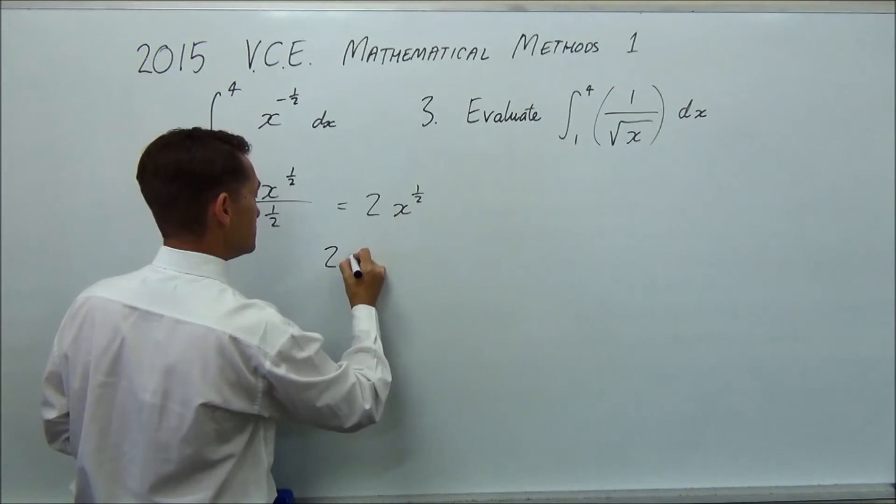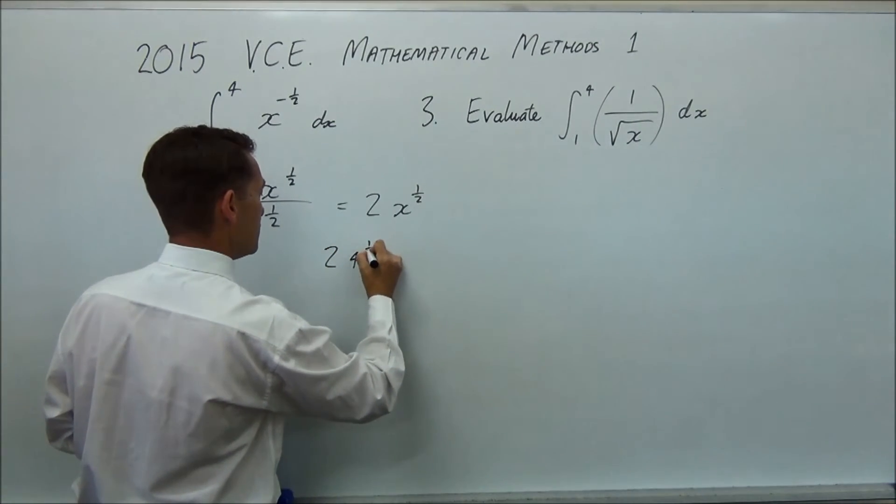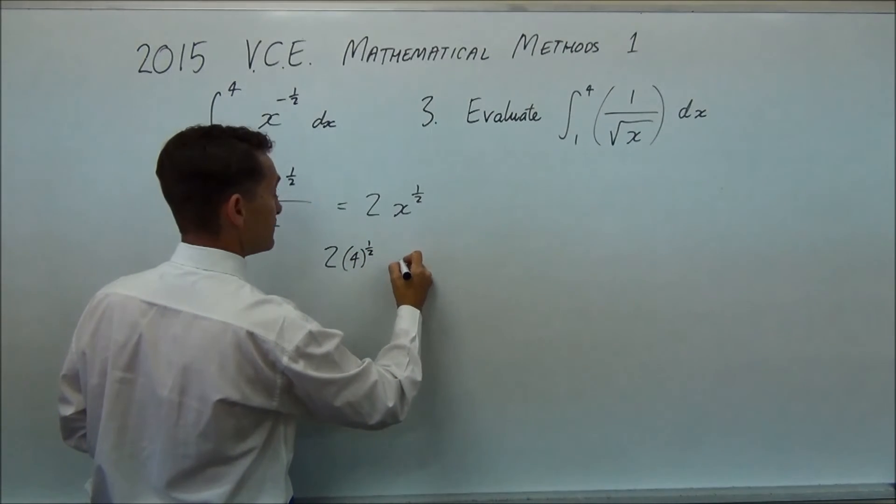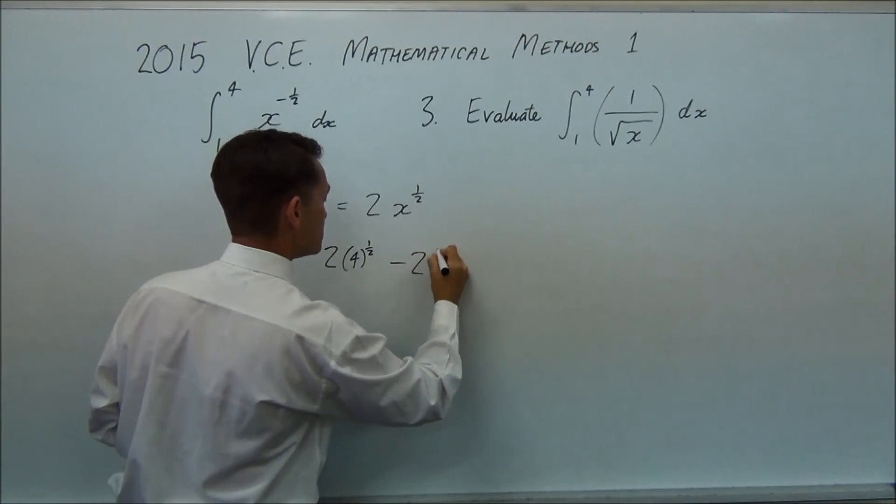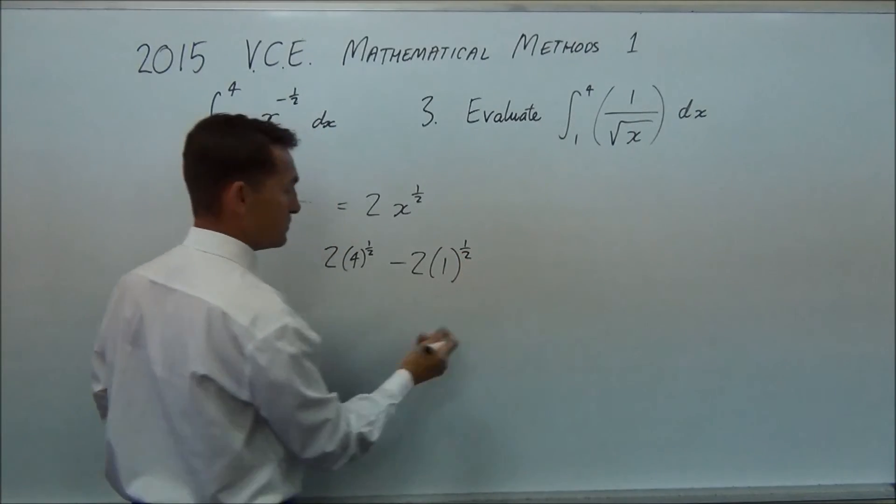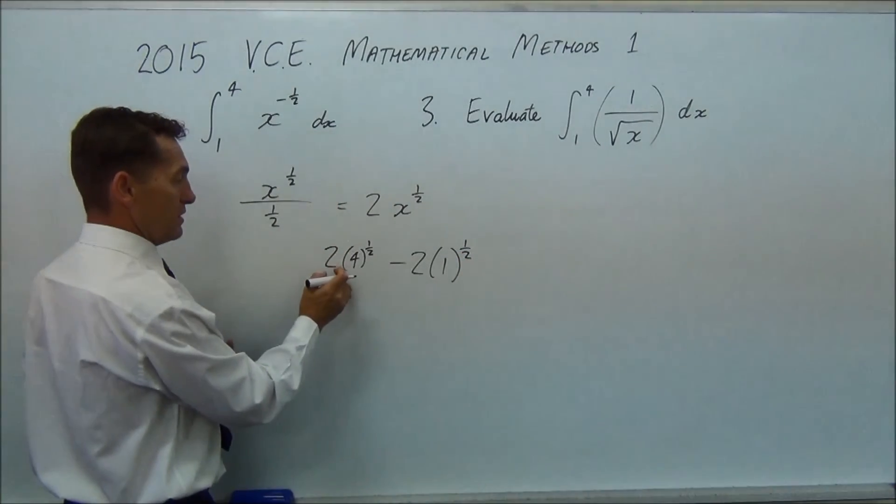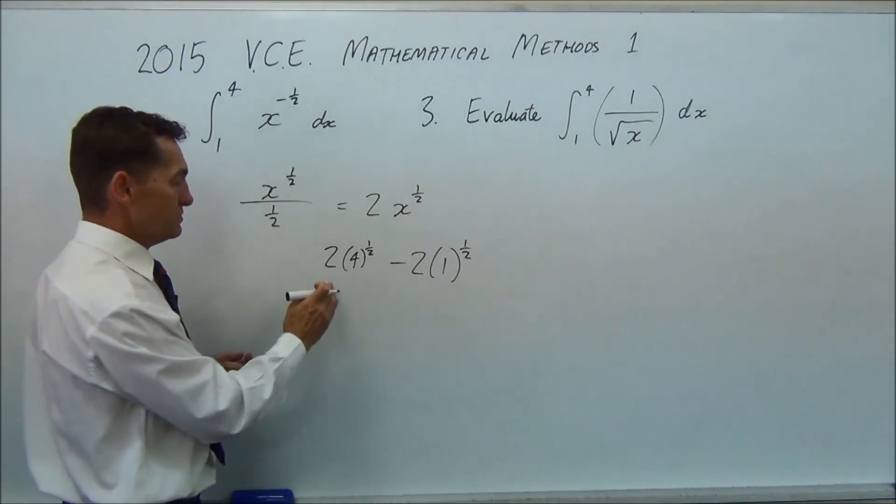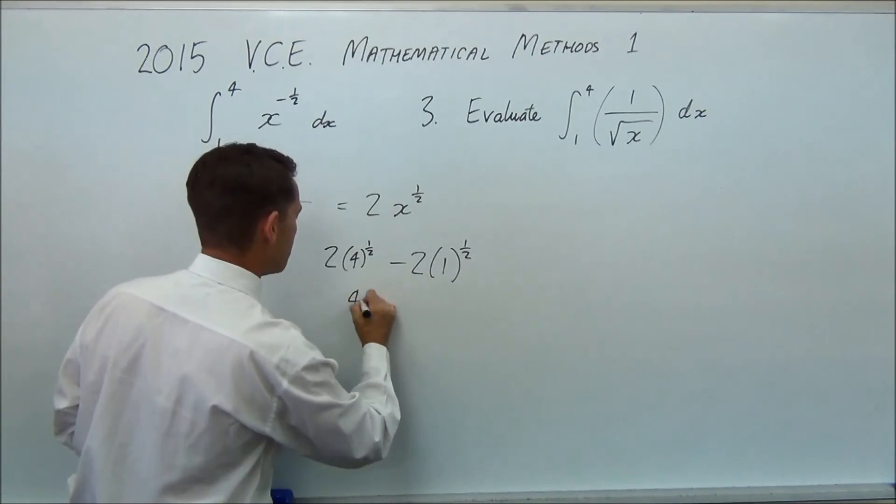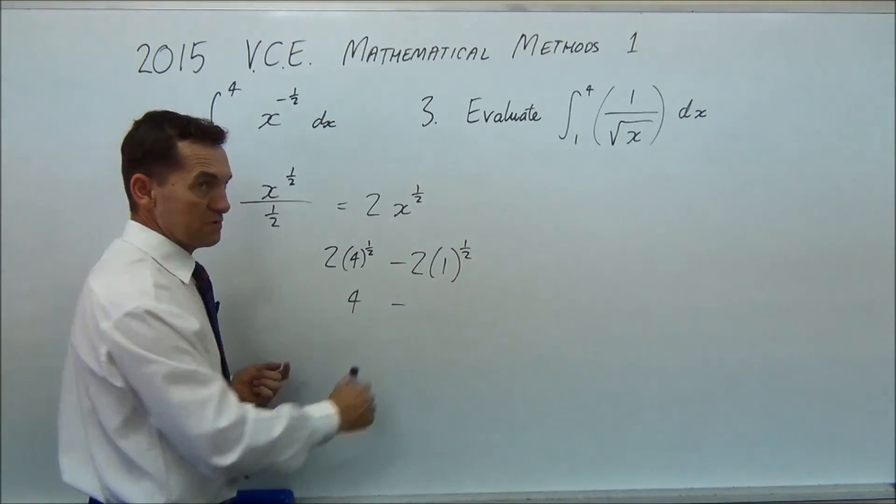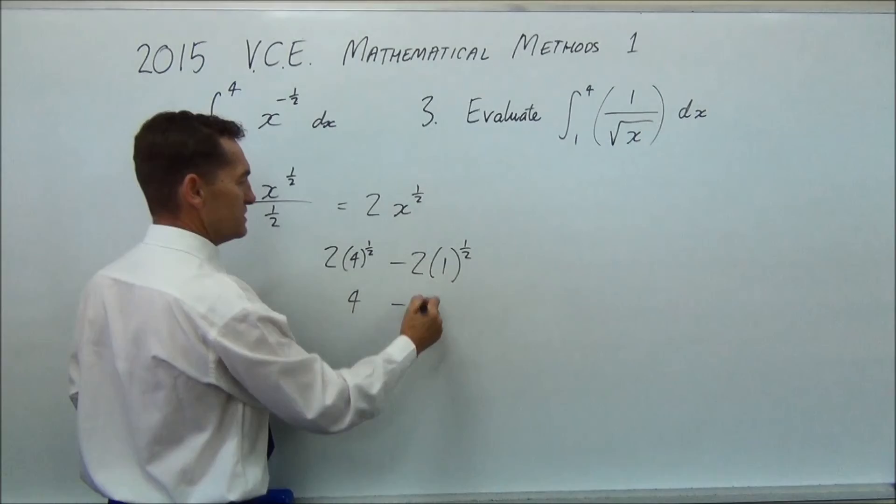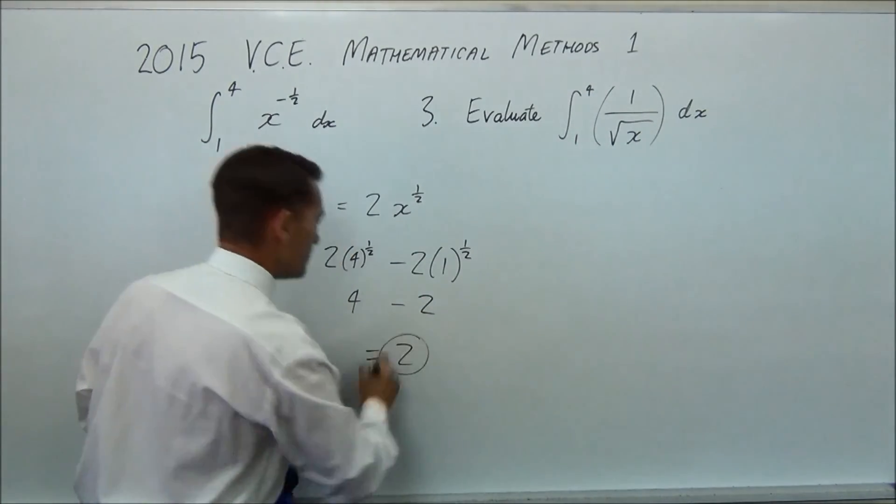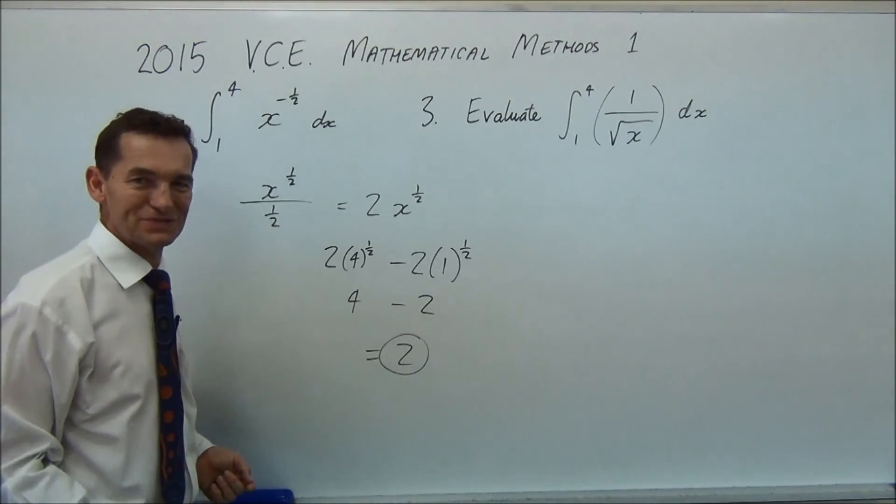So 2 times 4 to the half, or the square root of 4, minus 2 times 1 to the half, or the square root of 1. The square root of 4 is 2. 2 times 2 is 4. The square root of 1 is 1. 2 times 1 is 2. So pretty easy. Your answer's 2.